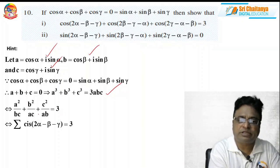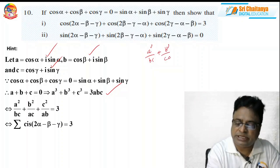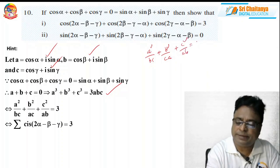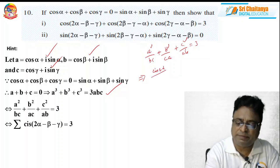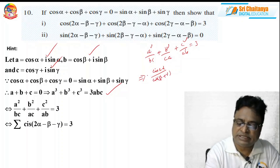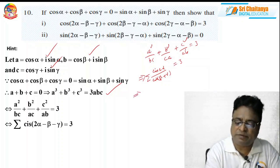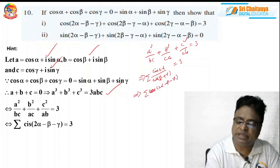So I got: A²/BC + B²/CA + C²/AB = 3. Now A² means — A is cos α + i·sin α — so A² means cis 2α. And BC means cis(β + γ). Taking sigma, that equals 3. If I expand it you get the same. And cis α / cis β = cis(α − β). So this implies sigma cis(2α − β − γ) = 3.